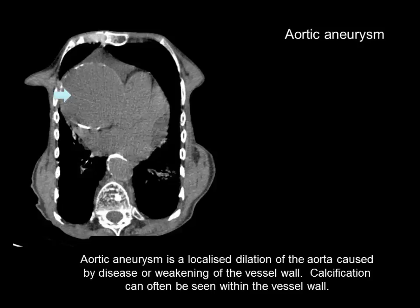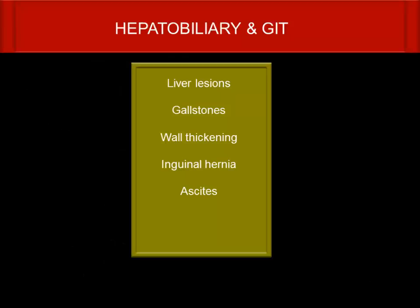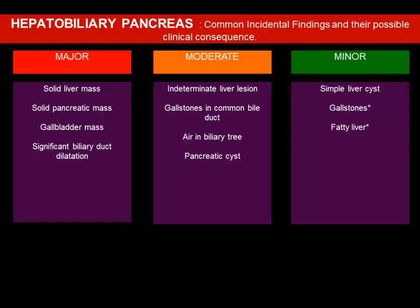If the aortic aneurysm is more than 5 centimeters, it must be reported. For hepatobiliary and GIT, you need to look for liver lesions, gallstones, wall thickening, inguinal hernia, and ascites. If there is a major finding — a large mass, solid pancreatic mass, gallbladder mass, or significant biliary duct dilatation — it is a major finding with treatment implications.